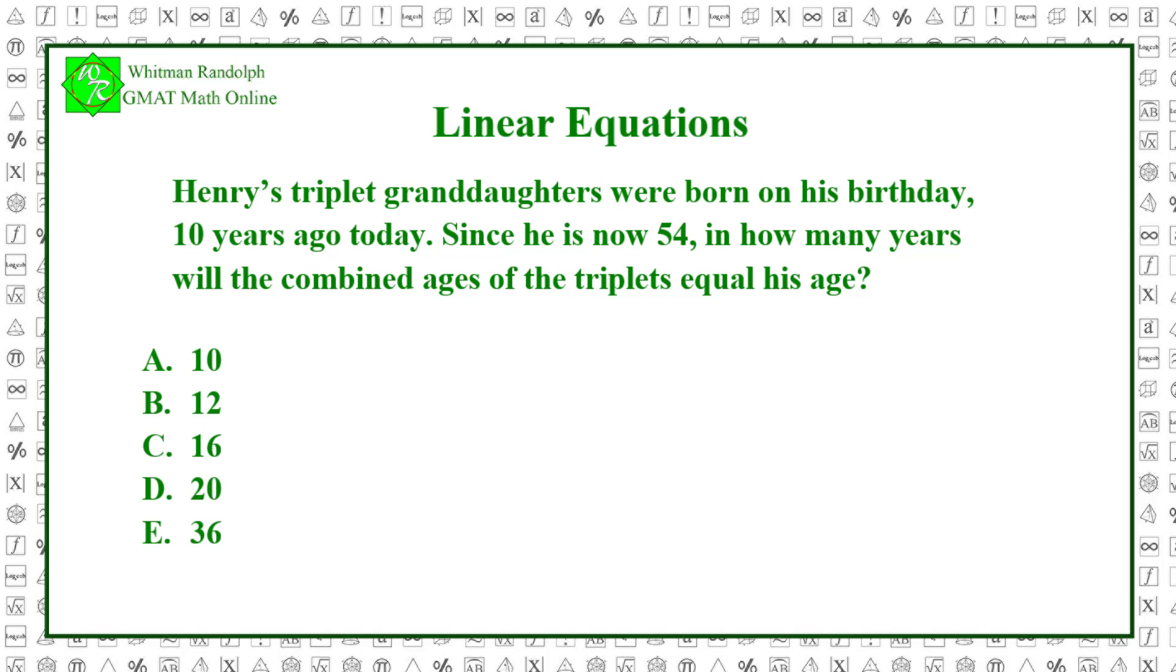In word problems, we normally use a variable to represent the quantity we are seeking. So, we let x equal the number of years before the combined ages of the triplets equals Henry's age. That being the case, we can use the information we're given in the problem to formulate an equation: 54 plus x equals 3 times the quantity 10 plus x.